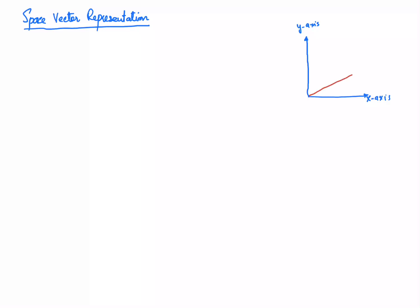Let's suppose that phase A is somewhere over here, and it is at angle theta from the x-axis. Then phase B is somewhere over here, and phase C is somewhere over here. So phase A is making angle theta with the x-axis.